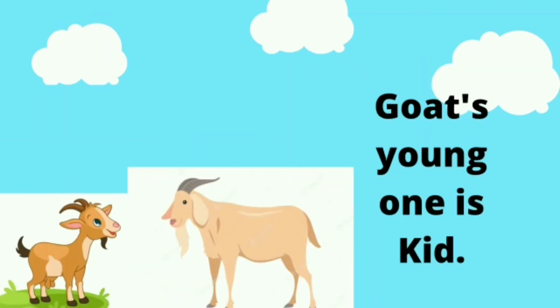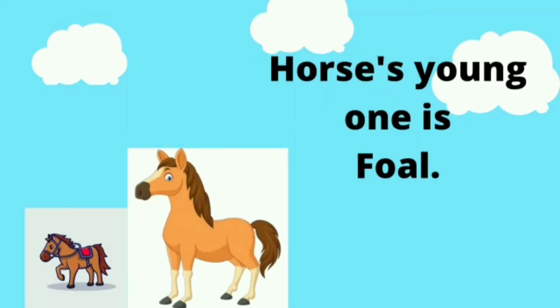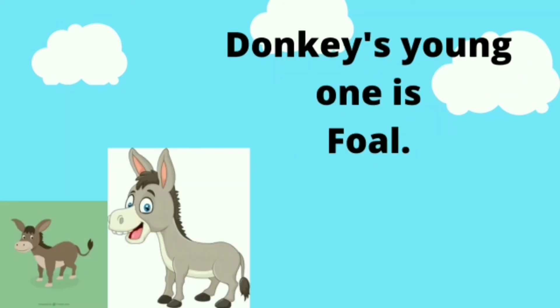Goat's young one is kid. Sheep's young one is lamb. Horse's young one is foal. Donkey's young one is foal.